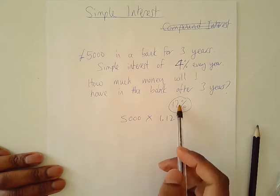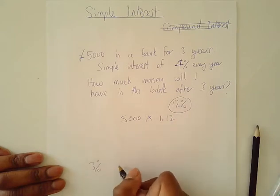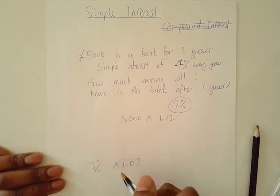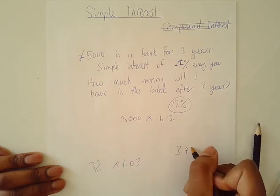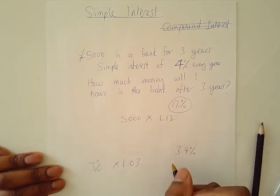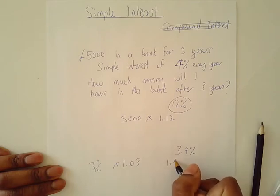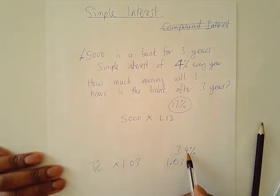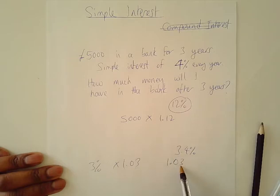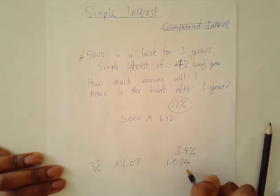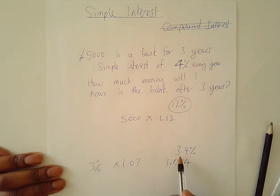If it was three percent, that would be one point zero three. If you had, for example, three point four percent, that'd be one point zero three four — the three refers to three percent, and you've got the extra four at the end of it.